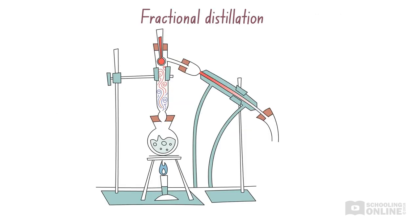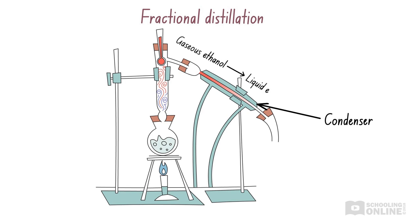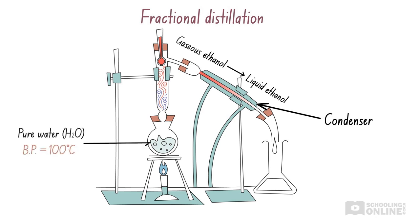So what happens once the ethanol reaches the top? Well, it passes through a condenser, where it is cooled from a gas into a liquid. Then it is collected in a separate container. After a while, we are left with water in the original container and ethanol in the new container.